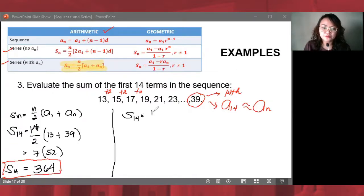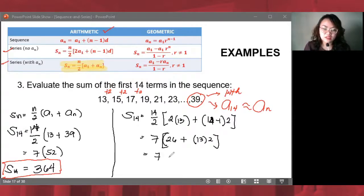S₁₄ = 14/2 × [2(a₁) + (n-1)d]. That's 14/2 × [2(13) + (14-1)(2)]. We have 7 times: 2 times 13 is 26, plus 13 times 2. So we have 7 times (26 plus 26). We have 7 times 52, which gives us 364. So we still arrive at the same answer.